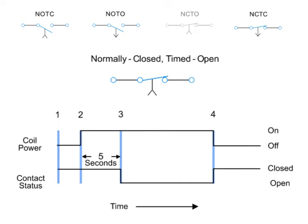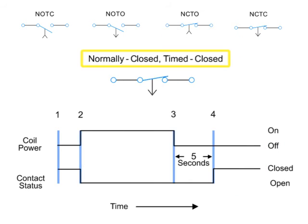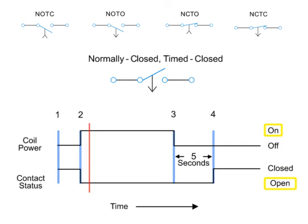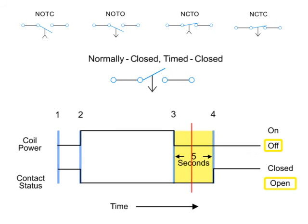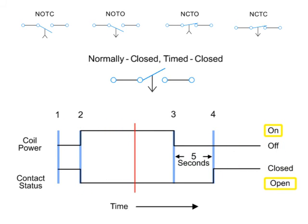The last time delay relay we will look at employs a normally closed, timed closed contact. Similar to the normally closed, timed open contact, this type of contact is normally closed when the coil is de-energized and opened by the application of power to the relay coil. However, unlike the NCTO contact, the timing action occurs when the coil is de-energized instead of when it is energized. Thus, the contacts open immediately when the coil is energized and close five seconds after the coil is de-energized.